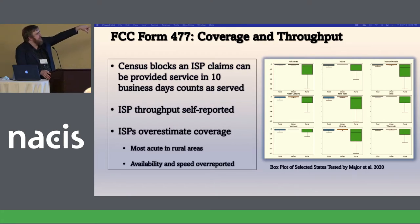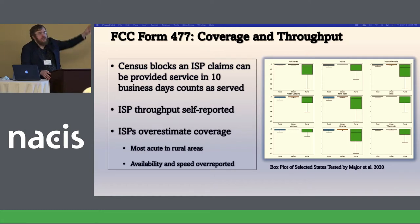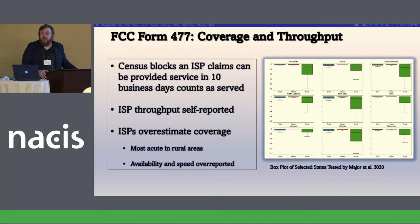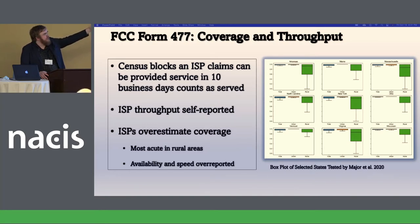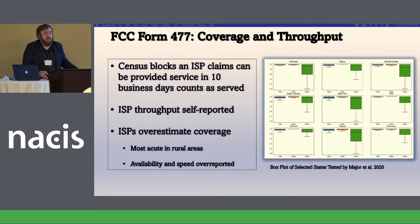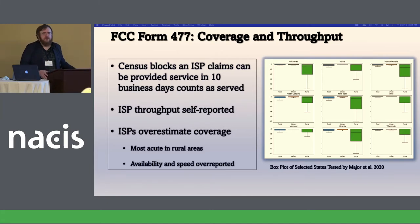There's a very good paper — Major et al. out of 2020 — where they queried the larger ISPs' databases: where can I get service from their actual consumer end, versus what they claim on the FCC map. The greens are rural areas — I think they did nine states. The reds are urban. There's a huge difference — sometimes 40% less than what they actually claim they serve in rural areas. It's not really much of a problem in urban areas; they generally serve most of it.